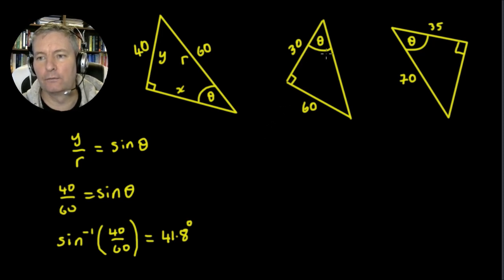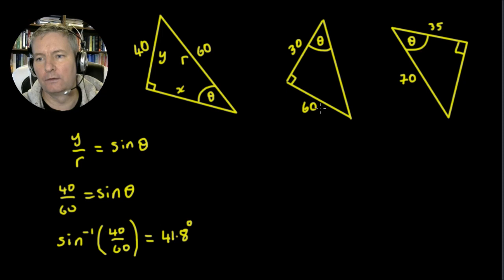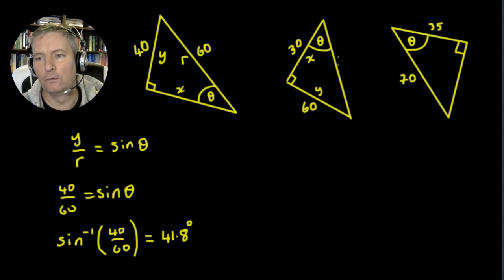We're looking for this angle theta. This length here is opposite the angle, so this is the opposite — we could call that y. And this length here must be the adjacent, so that's x, and the longest length is the hypotenuse r.